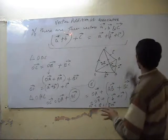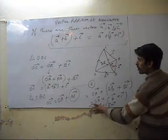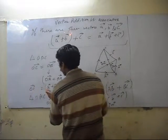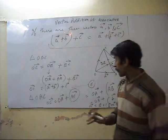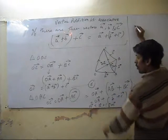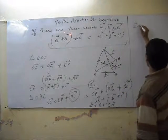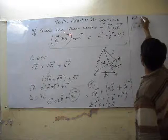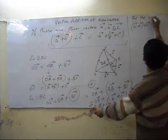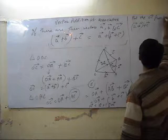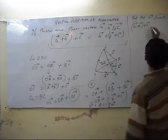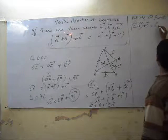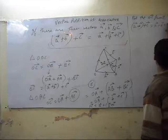Now we will put the value of OC from equation 1. The OC value is A vector plus B vector plus C vector. Putting this in, the value is equal to A plus B vector plus C vector.